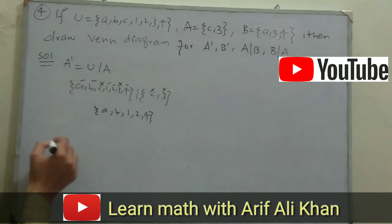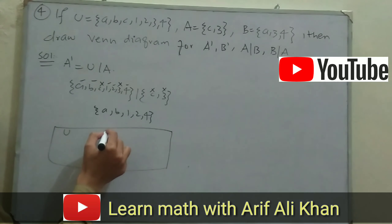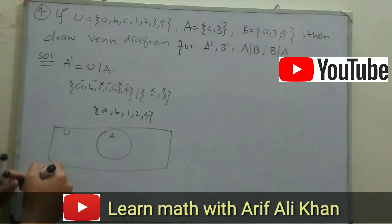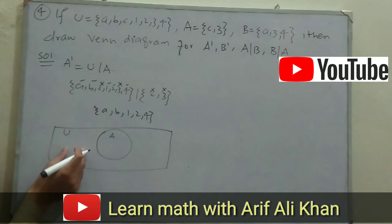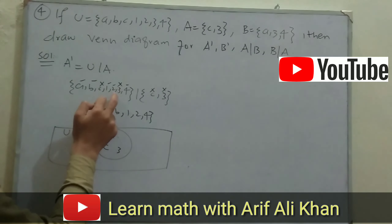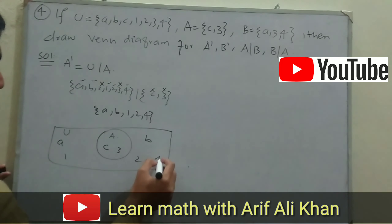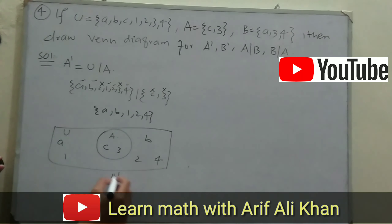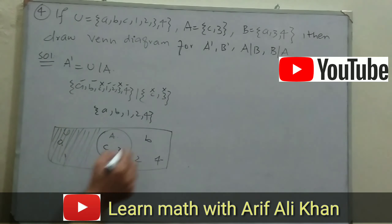Now we represent A complement with a Venn diagram. Draw a rectangle for the universal set and circle for set A. The common elements C and 3 are placed inside circle A. The remaining elements A, B, 1, 2, and 4 are placed outside A but inside the universal set. For A complement, we shade the area outside set A — that is the universal set region excluding A.